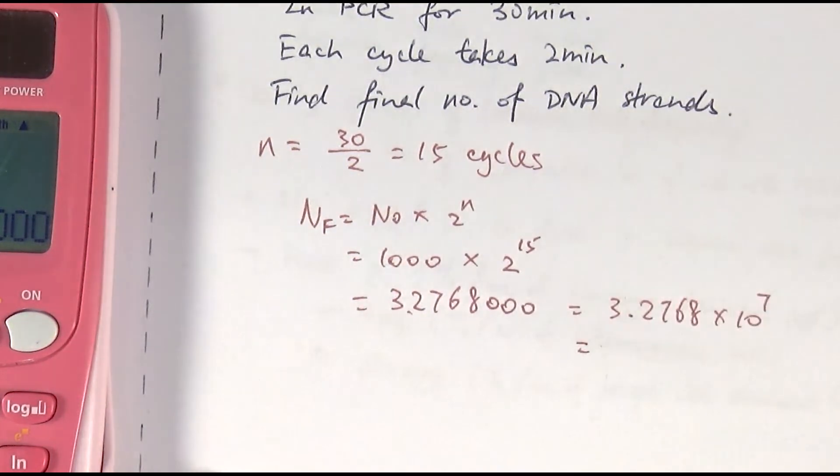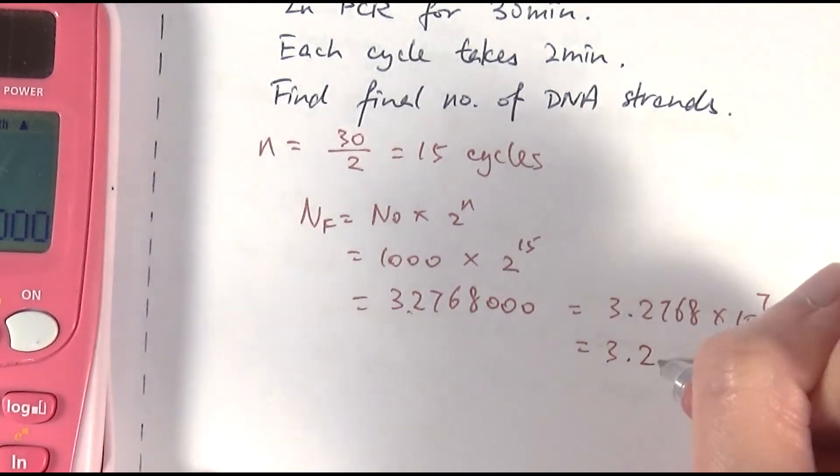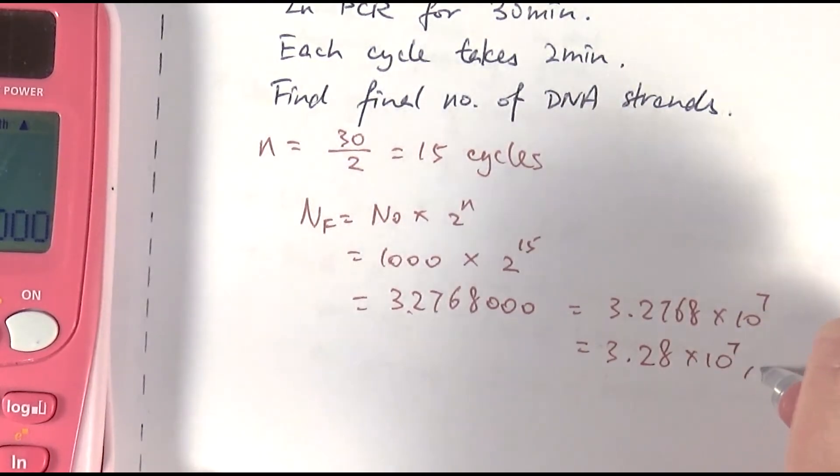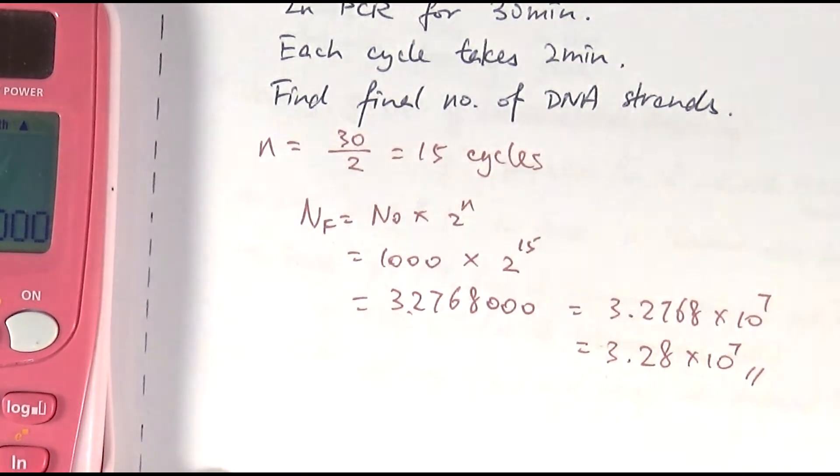Now, if the question says, present it in standard form, and also in two decimal places, then I have to simplify that to 3.26, I'll round it up, 8 times 10 to the 7th. And that will be my final answer there. And that would be calculating the final quantity after that number of cycles of doubling things by PCR or by binary fission.